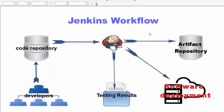To explain this, I will reopen this diagram from the Jenkins introduction. Every change you make in your software - for example, as a developer you make changes and push them into your code repository, like a Git repository - the job of Jenkins is to build your code in a reliable manner, then run different kinds of testing such as unit testing or integration testing, and finally deploy your code and transfer it into an artifact repository.